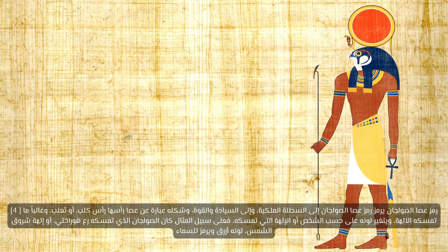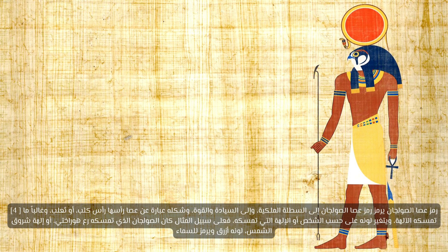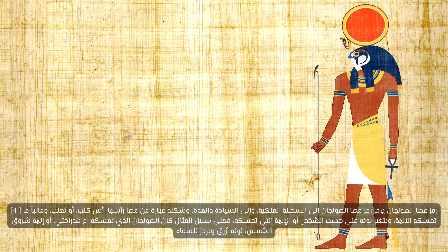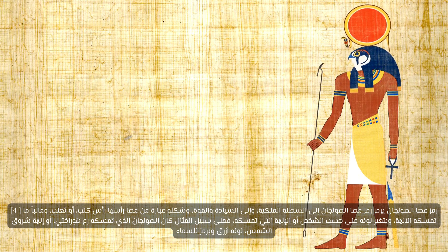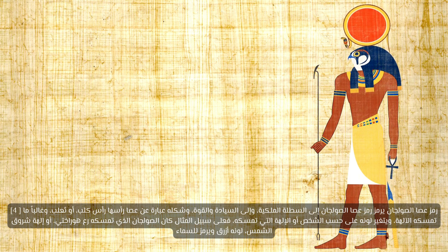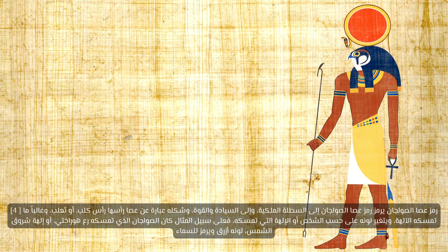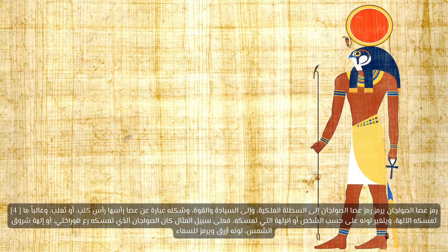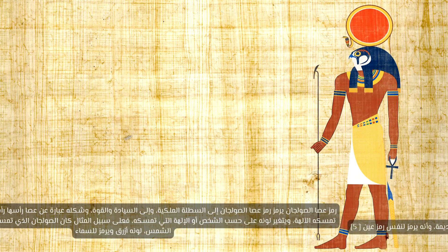Four: the scepter symbol. The scepter symbol symbolizes royal power, sovereignty, and strength. Its shape is a stick with the head of a dog or a fox, and it is often held by the gods; its color changes according to the person or goddess holding it. For example, the scepter held by Ra-Horakhty, or the goddess of sunrise, was blue in color and symbolizes the sky.